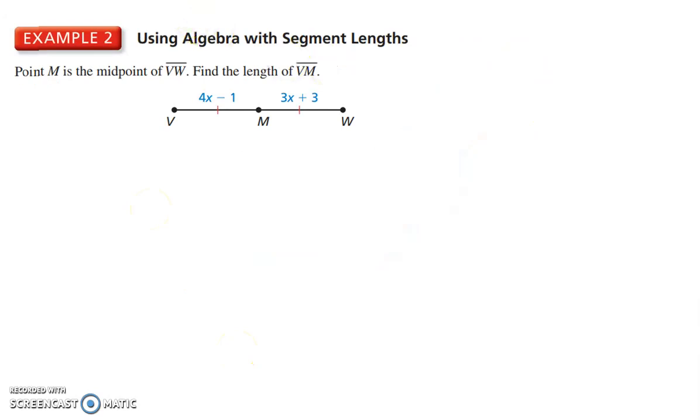Here we have a line segment and instead of lengths, they gave us some algebraic expressions. We want to find the length of VM, so we want to find this right here. We know that M is the midpoint of the entire segment, so that tells us that VM, the segment VM, is congruent to the segment MW.